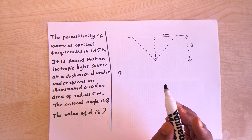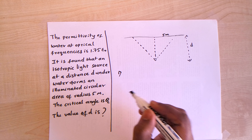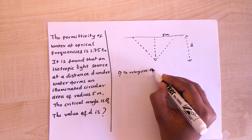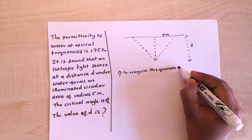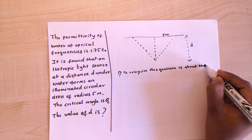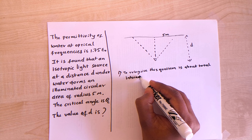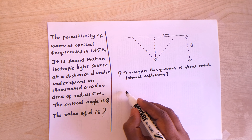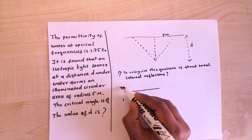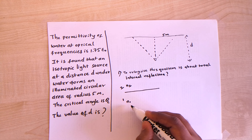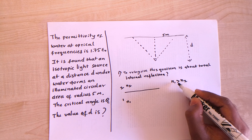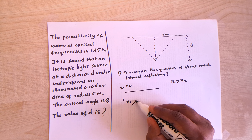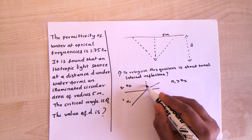This question is about total internal reflection. What is total internal reflection? It's a phenomenon where you have two mediums, one and two, with refractive indices n1 and n2, where n1 is greater than n2 — meaning the first medium is denser. Light traveling from this denser medium to a rarer medium behaves in a special way.